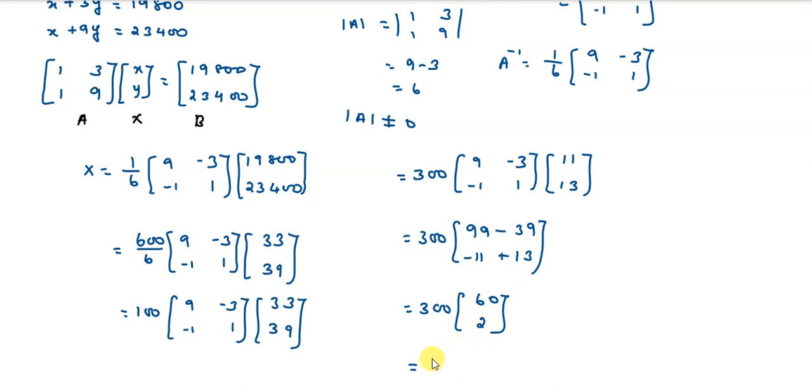If we multiply, we get [18,000; 600]. Therefore, the starting salary is ₹18,000 and the fixed increment is ₹600.